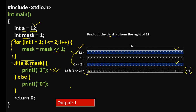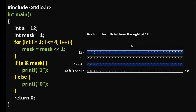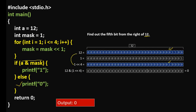Now let's take another example to understand it even better. This time, we're going to find out the fifth bit from the right of 12. The fifth bit we see is 0. Then we're moving the 1 bit to this corresponding position, and if we do the bitwise AND operation, then we get 0. If we get 0, this if condition evaluates false, then it will print 0. And we see that at this position, we have the bit 0. This is how we can get a bit from a binary number, and this is the concept of bit masking.